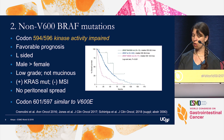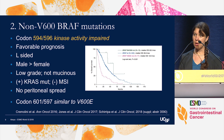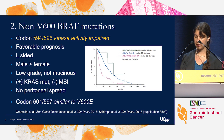However, these codon 601 and 597 mutations are activating the dimerized form of BRAF, and so next-generation inhibitors — the so-called paradox breakers — may be required for response.